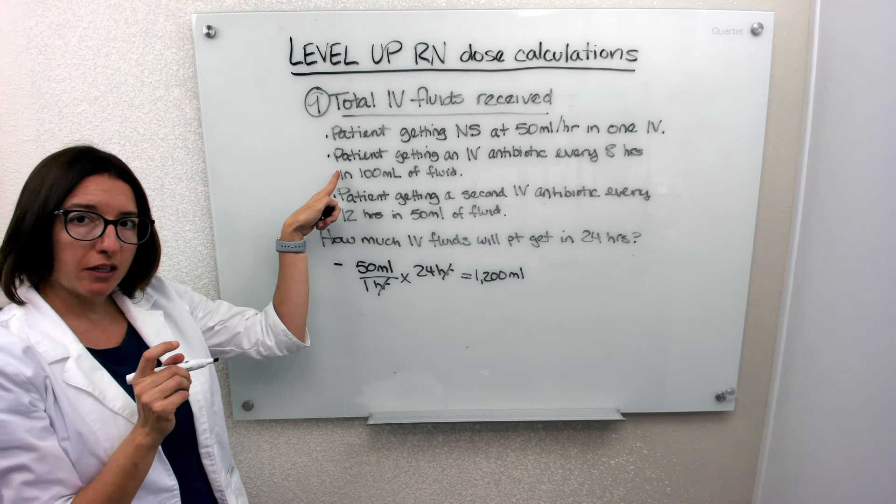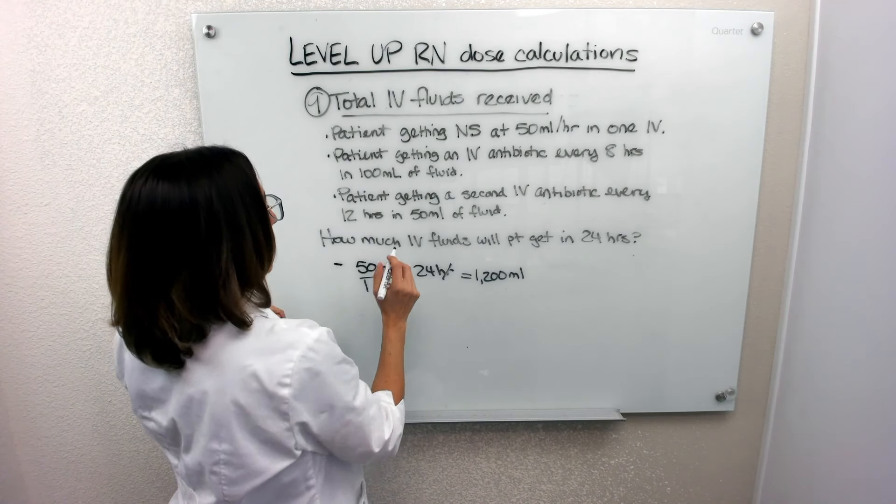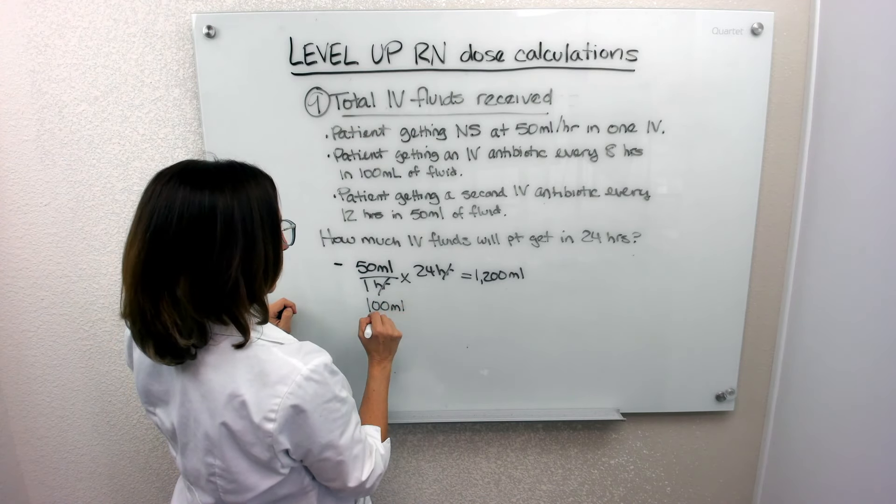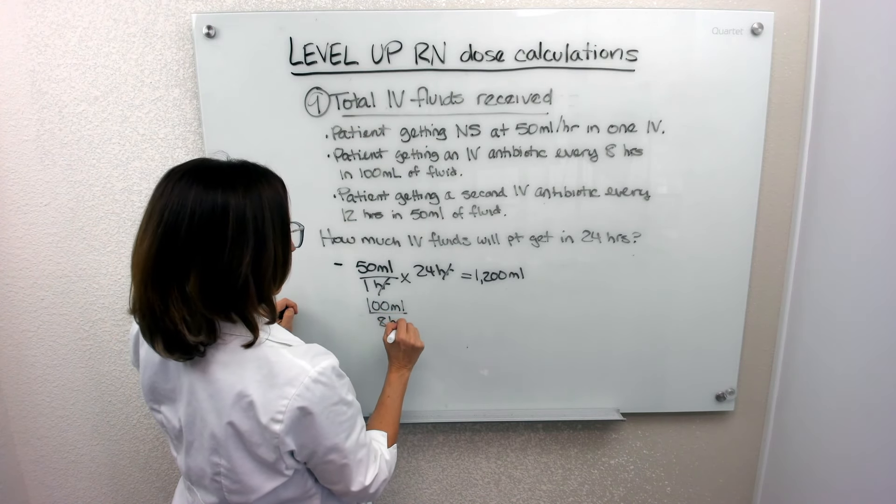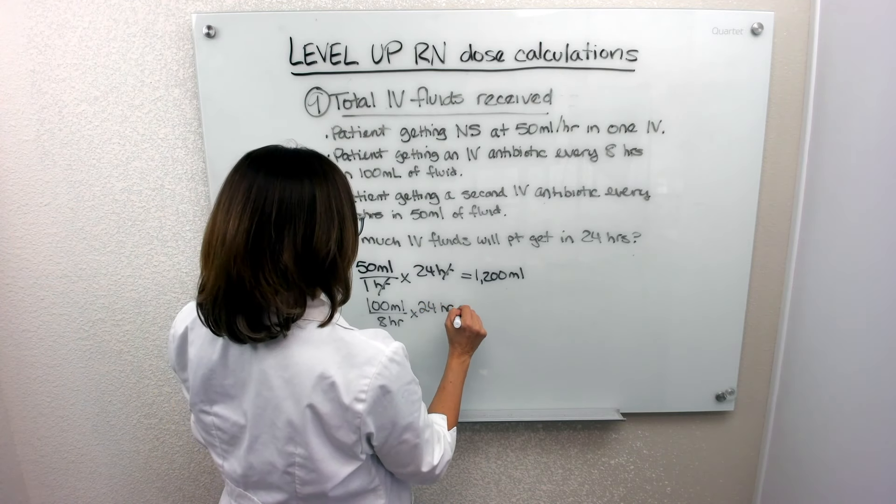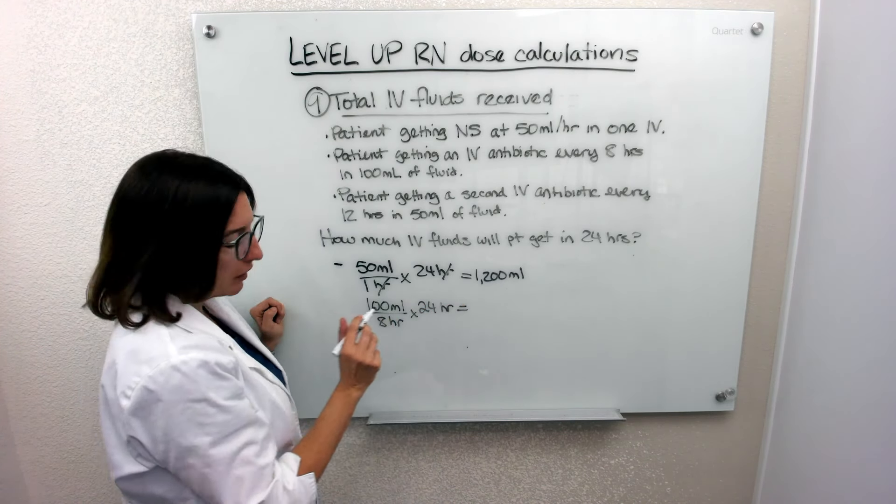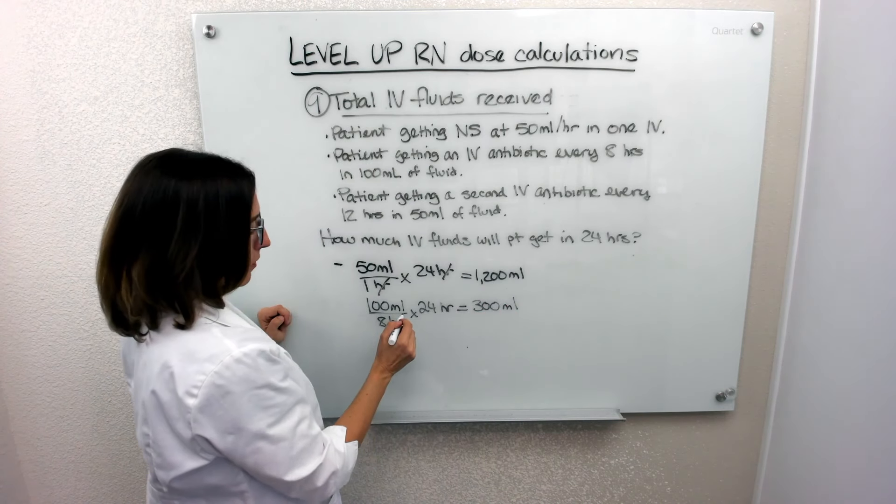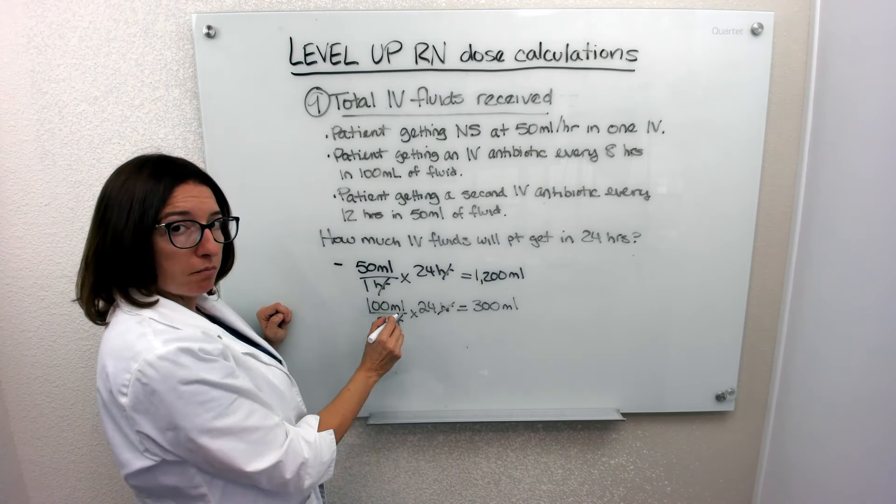Next, let's handle the next antibiotic. So with that antibiotic, they're going to be getting 100 milliliters of fluid every eight hours. So over a 24-hour period of time, we're going to be getting 300 milliliters. Again, the hours cross off here and we're left with milliliters.